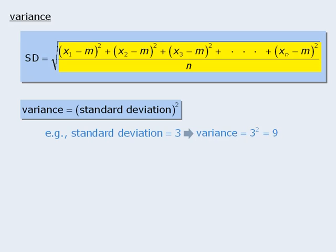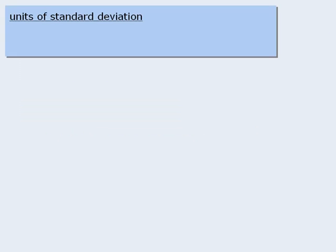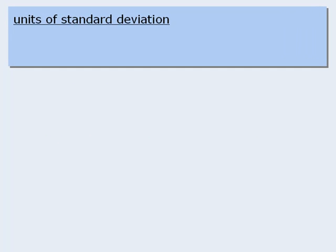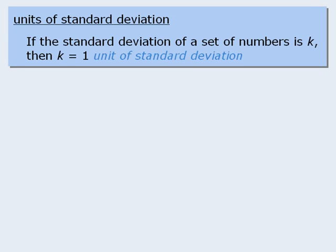And that's pretty much all you need to know about variance. The next concept to discuss is units of standard deviation. A unit of standard deviation is the same as the standard deviation of a set. So if the standard deviation of a set of numbers is k, then k equals 1 unit of standard deviation.